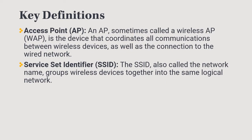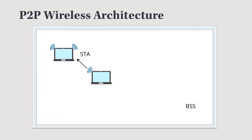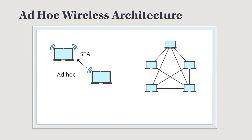A couple of different ways that we can set up a wireless network: the first one is a point-to-point wireless architecture, where we just have two devices. The network interface card or transmitter on each one is going to be called a station or STA. This is our basic cell — just two devices connected to each other.